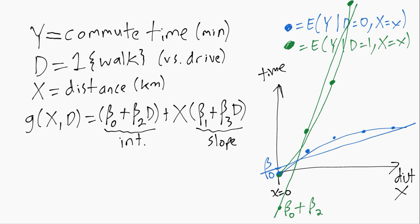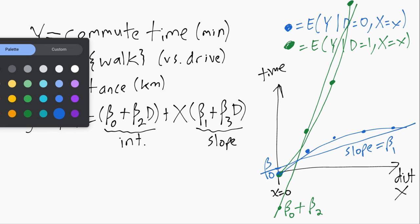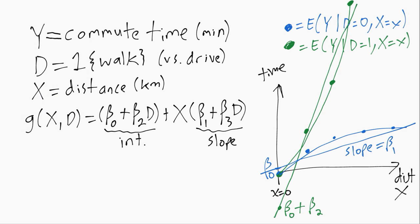We can also think about the slopes here. So when d equals zero for the driver, the slope is beta one. And then for the walker, when d equals one, the slope becomes beta one plus beta three. So that's the slope of this green line.